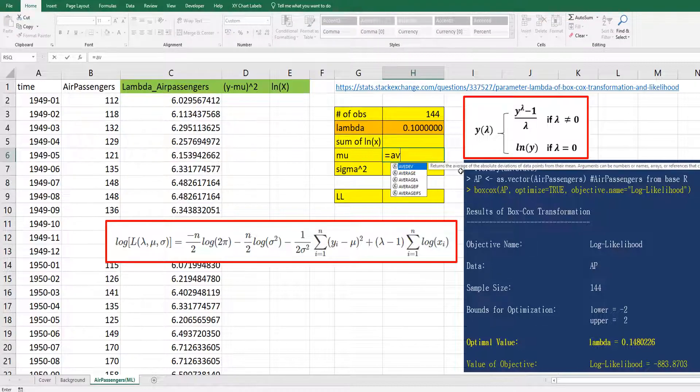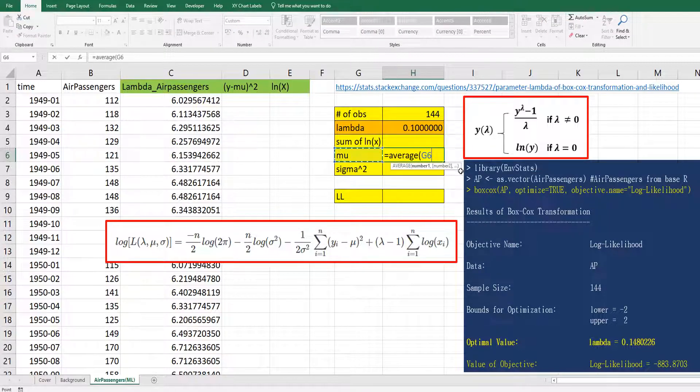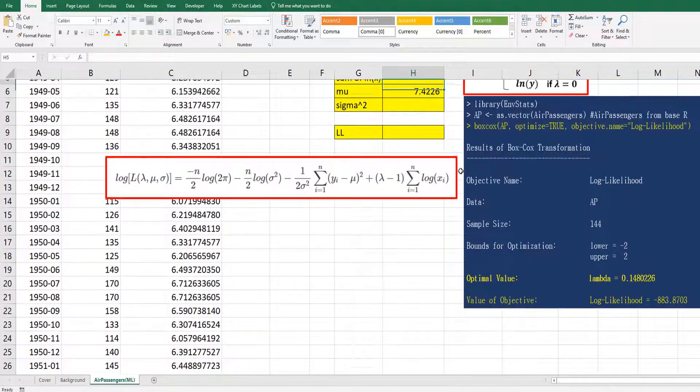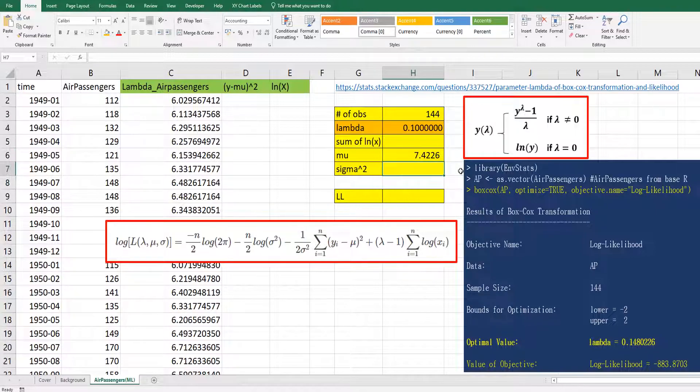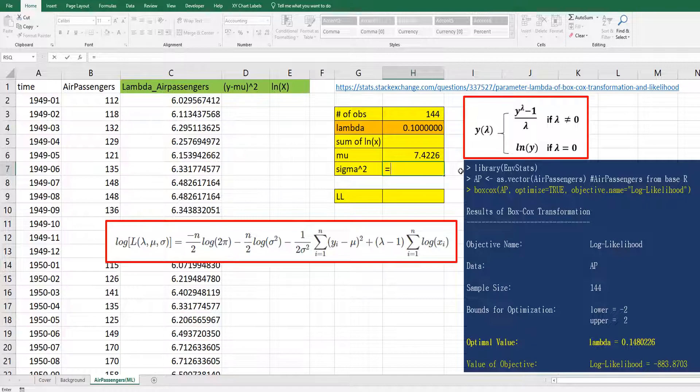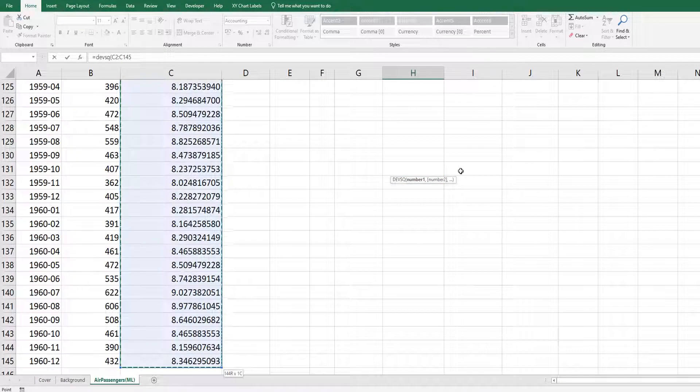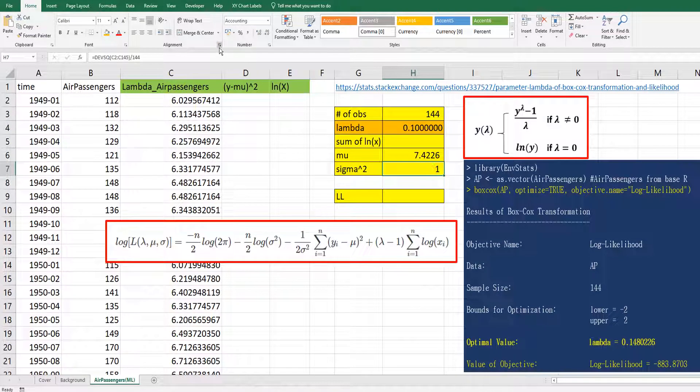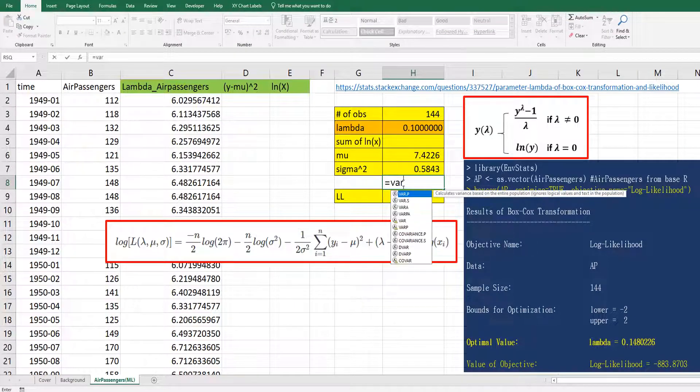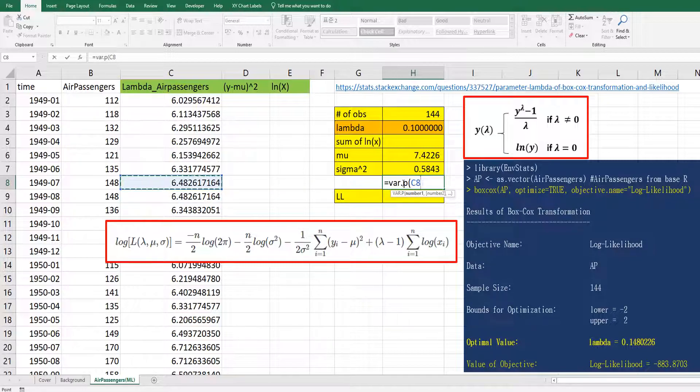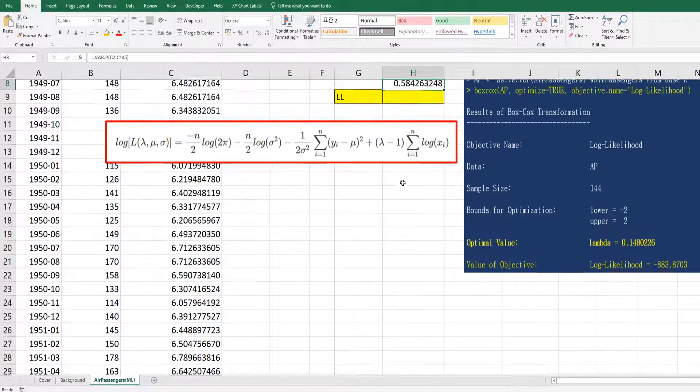Then mu is the average of lambda passenger data. And sigma squared - this is population-based sigma squared. So instead of using stdev.s, let's say devsq over 144. It should be same as VAR.P.